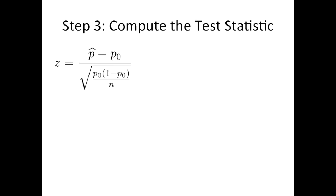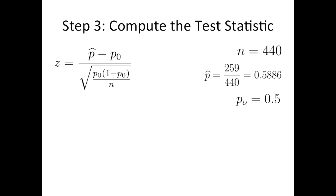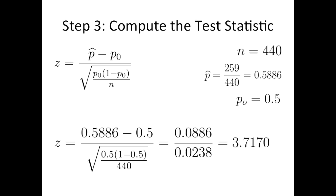Step 3: compute the test statistic. This is our formula for the z test statistic. In the numerator, we have the difference between the sample proportion and the hypothesized population proportion. The denominator is the standard error. Recall from our scenario: n equals 440, p-hat equals 0.5886, and the hypothesized population proportion is 0.5. Plugging these values into the formula, we find a z test statistic of 3.7170. This essentially creates a normal distribution with a mean of 0.5 and a standard deviation of 0.0238, and computes a z score.